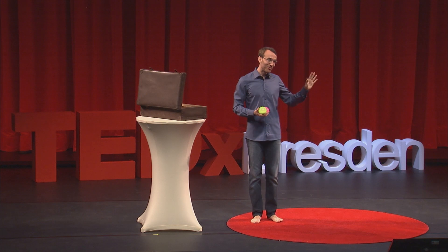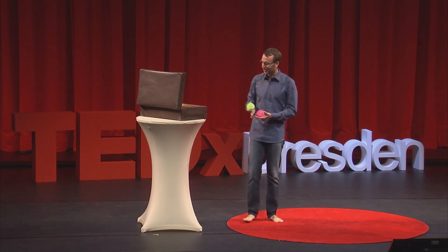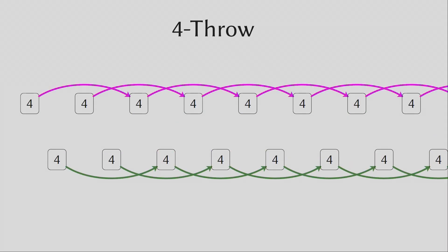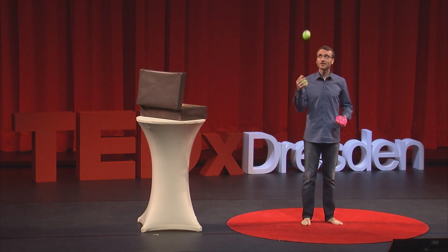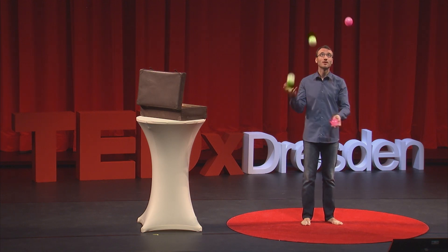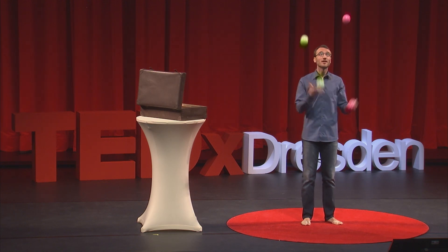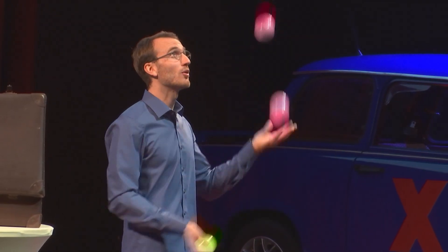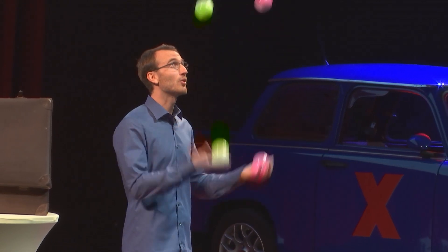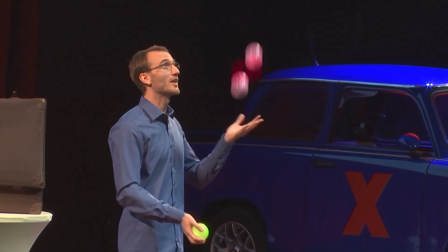We've already seen three-ball juggling, so I move on to four-ball juggling — it's actually the first real trick I'm doing. This is two balls in my right hand and two in my left hand, and then I combine it. You can see how the green balls always stick to my right hand, and the red balls always stick to my left hand.